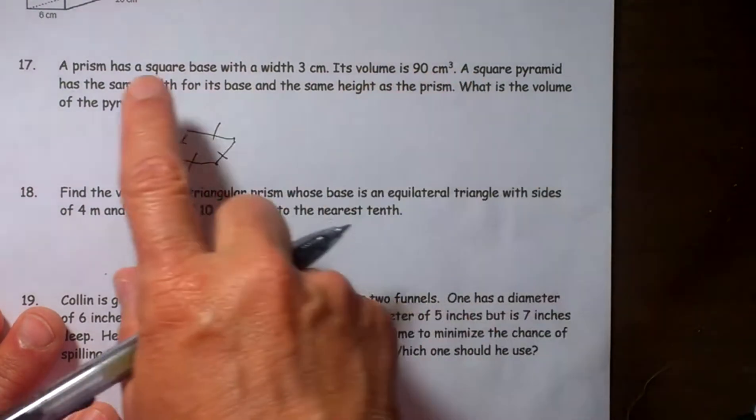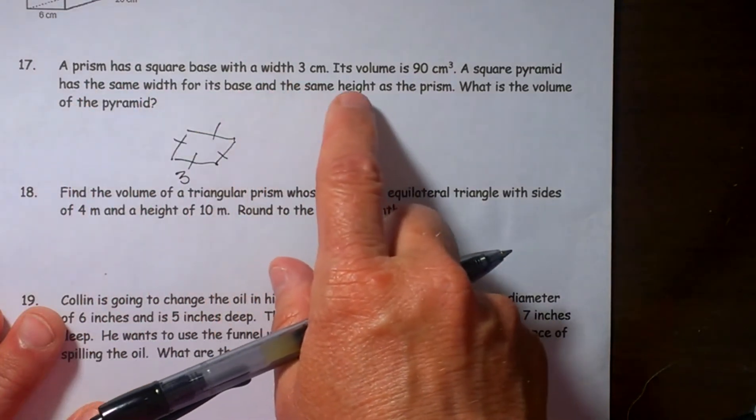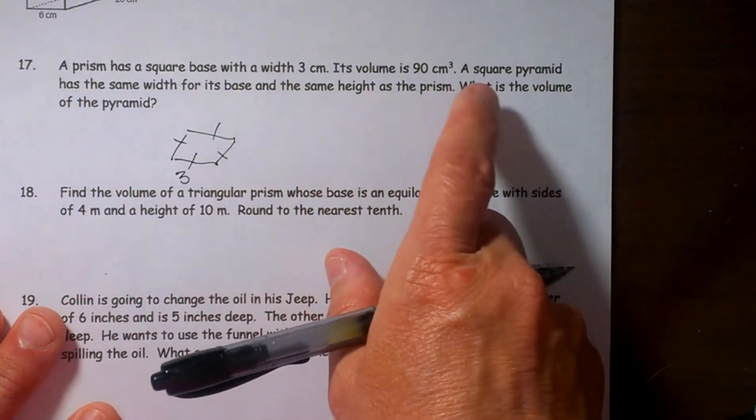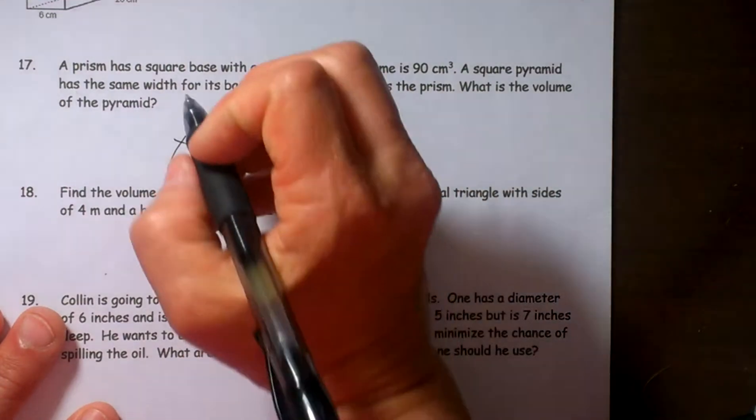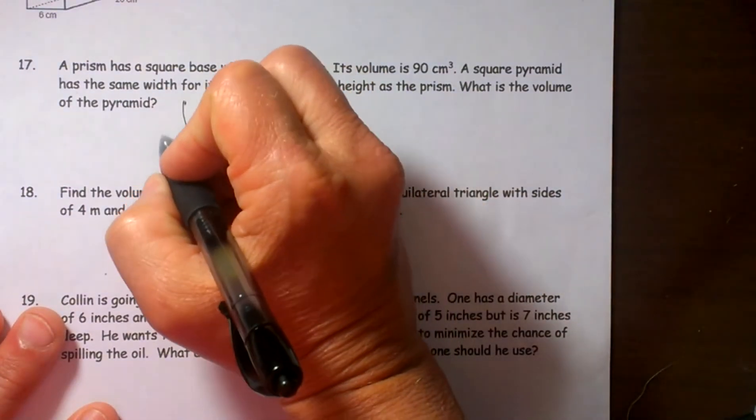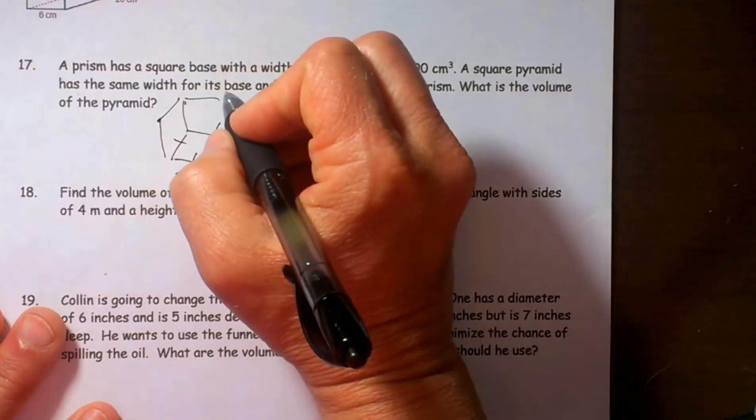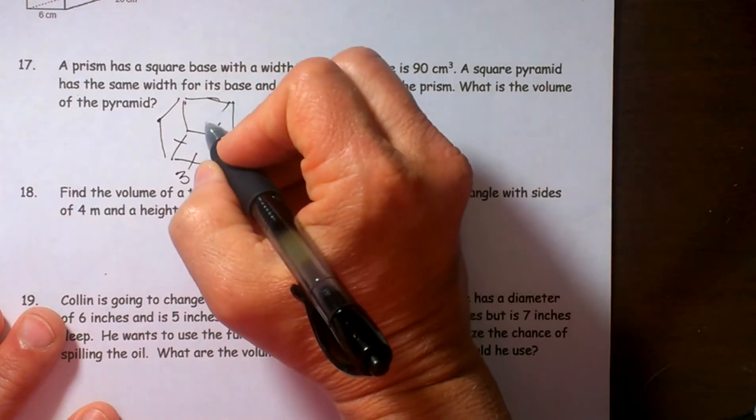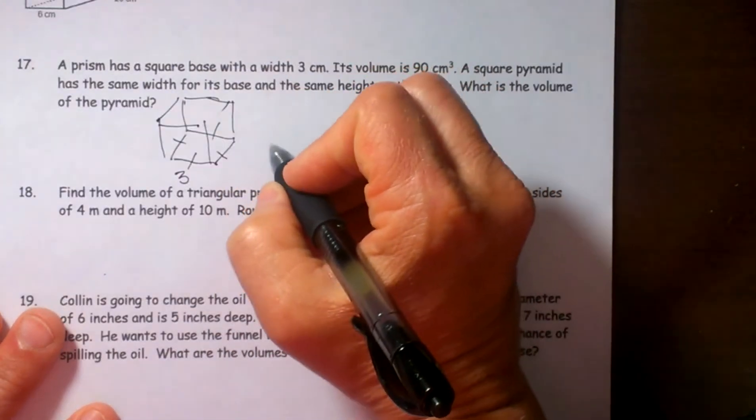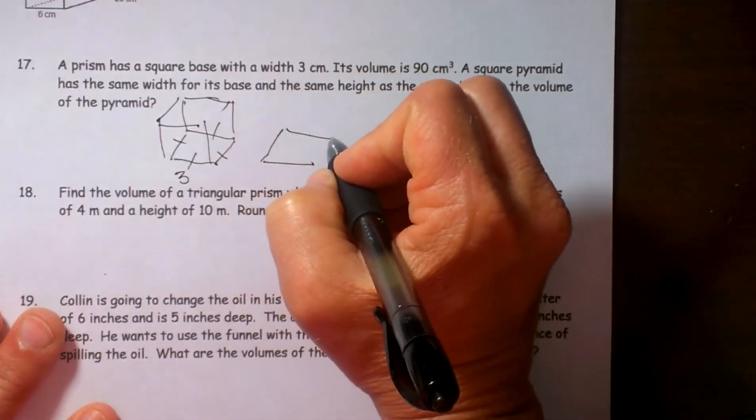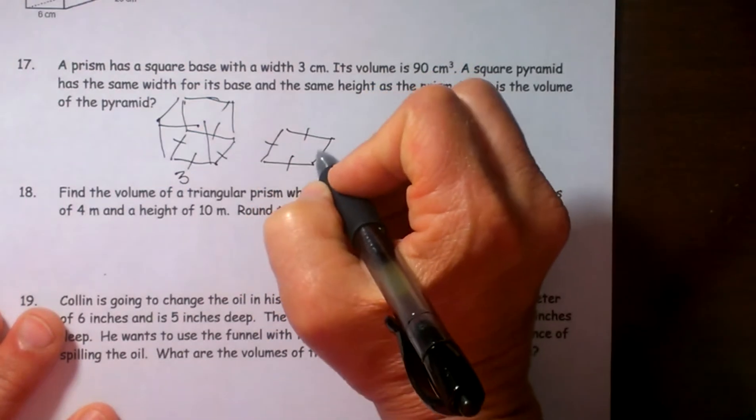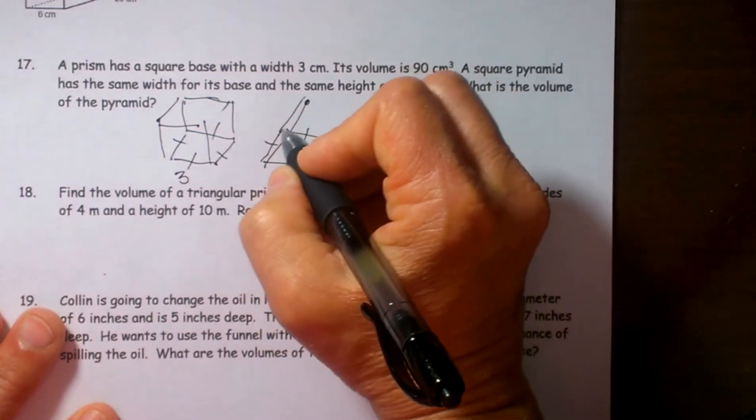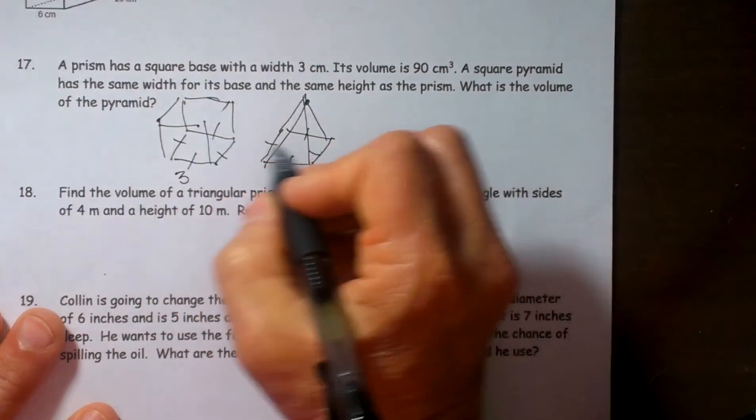A square pyramid has the same width and base and the same height as the pyramid. What is the volume of the pyramid? Okay, so if you have a prism and its associated pyramid has the same base, what is the ratio here?